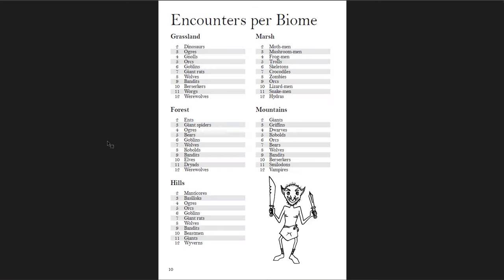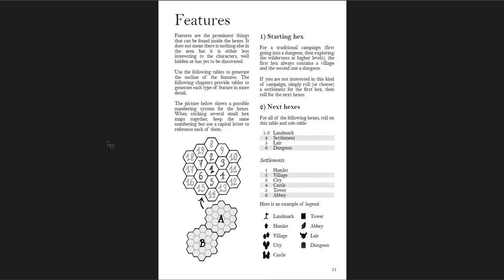There are encounter tables, though no stats are given for any creatures — it's system neutral, assuming you have stats for these creatures in your game of choice. Then you get how to fill out those biomes with features. You start with generally a settlement in the first hex, then roll for each one past that. Landmarks are the most common thing you'll roll, and then settlements, lairs, and dungeons are each equally likely. If you roll a settlement, there are six kinds: hamlets, villages, cities, castles, towers, or abbeys.